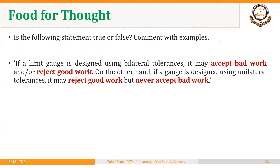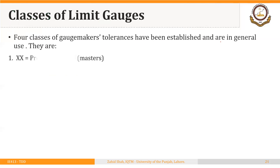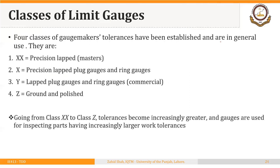To summarize: if a limit gauge is designed using bilateral tolerances, it may accept bad work and/or reject good work. On the other hand, if the gauge is designed using unilateral tolerances, it may reject good work but will never accept bad work.